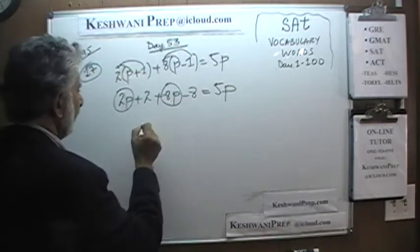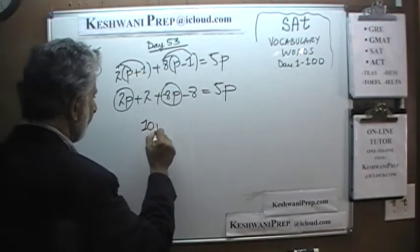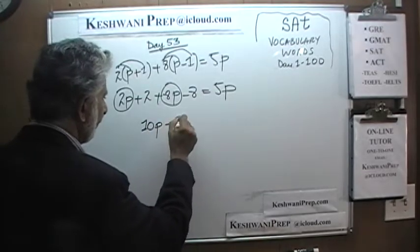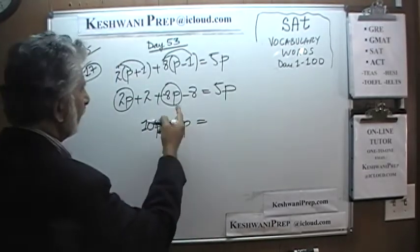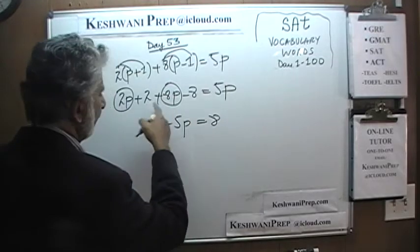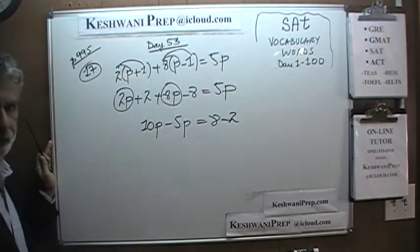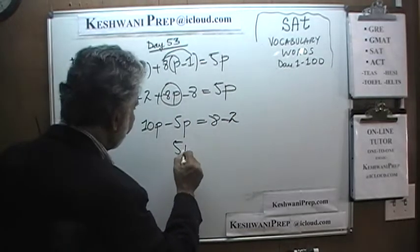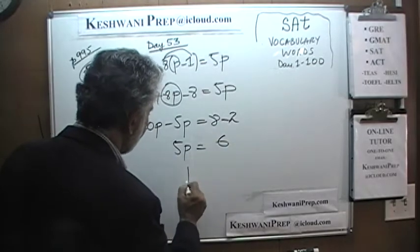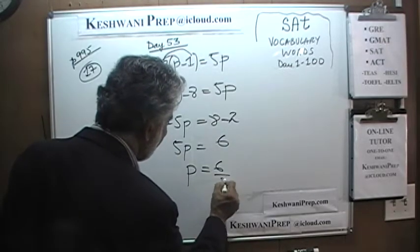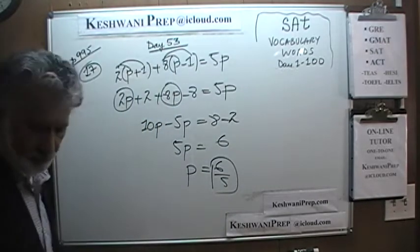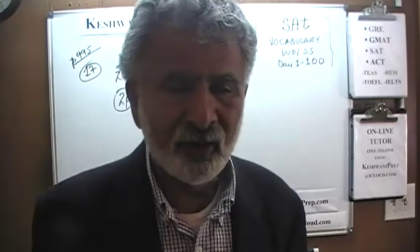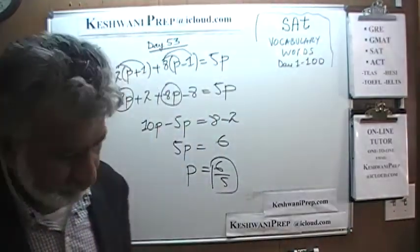So this is 2p plus 8p, which is 10p, minus 5p equals 6. That gives us 5p equals 6, so p equals 6 over 5. Don't waste your time trying to convert this into a decimal — it's unnecessary. Just enter 6 over 5.